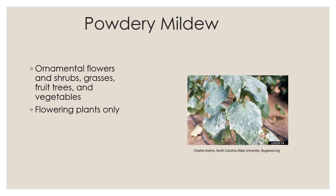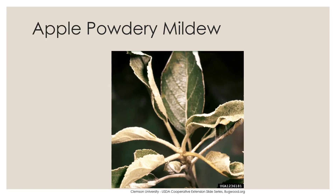Unlike downy mildew, which we already talked about, with powdery mildew you can find the fruiting bodies on either the top or bottom surface of the leaf. With downy mildew, it's only found on the underside.